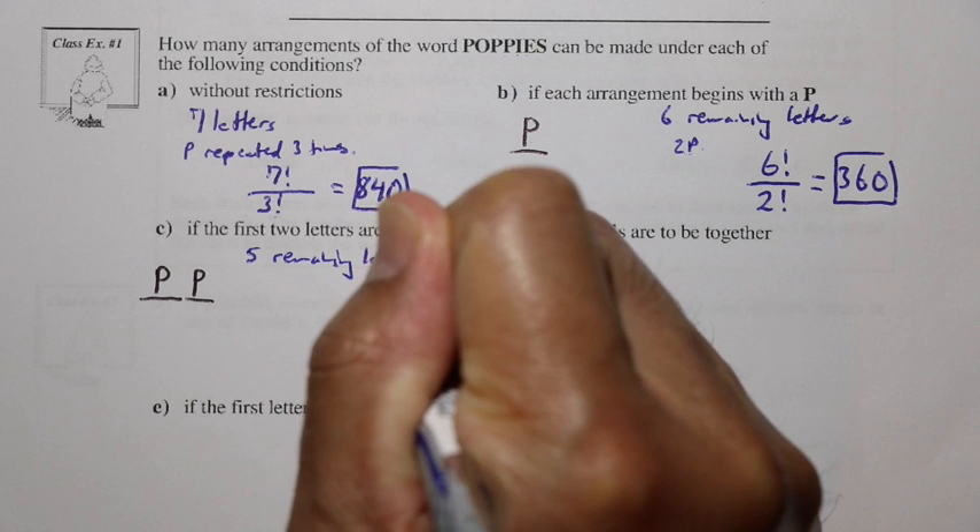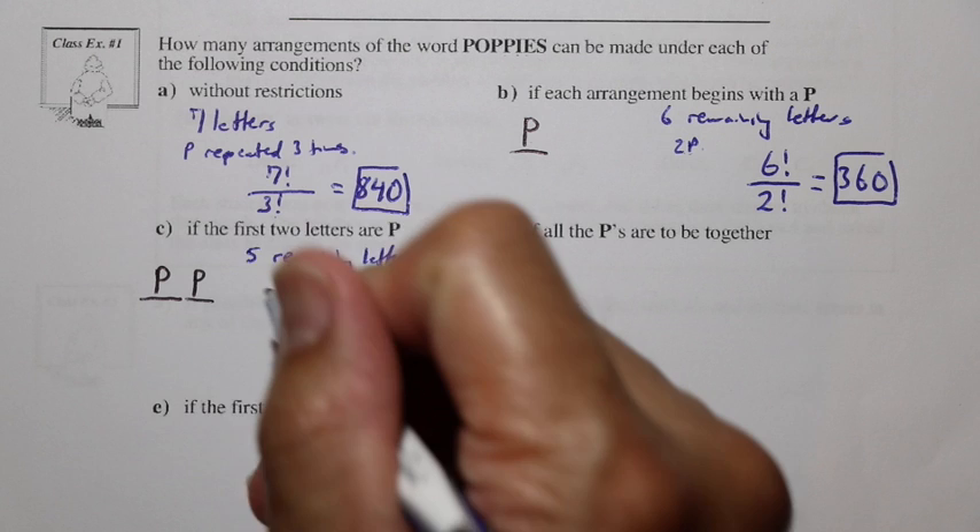In C, if the first two letters are P, so here I'll use my black again. This is fixed as a P. This is also fixed as a P. And then we see there's going to be five remaining letters. And if we look at it, here we have the two P's in front, there are no repeating letters of the five remaining. So here it's going to be 5 factorial, or in other words, it's going to be 120.